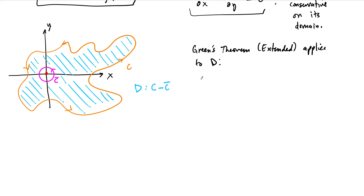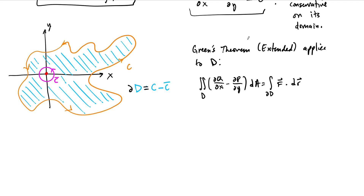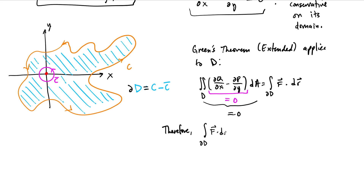The extended Green's theorem tells us the double integral over D of (∂Q/∂x − ∂P/∂y) dA equals the path integral around the boundary of D, which is C minus C-hat, of F dot dr. Since our vector field is conservative, ∂Q/∂x − ∂P/∂y equals zero, so the entire double integral is zero, meaning the integral around the boundary equals zero.